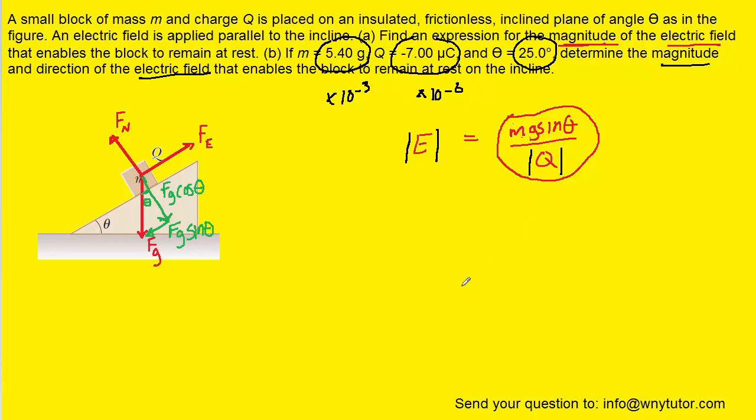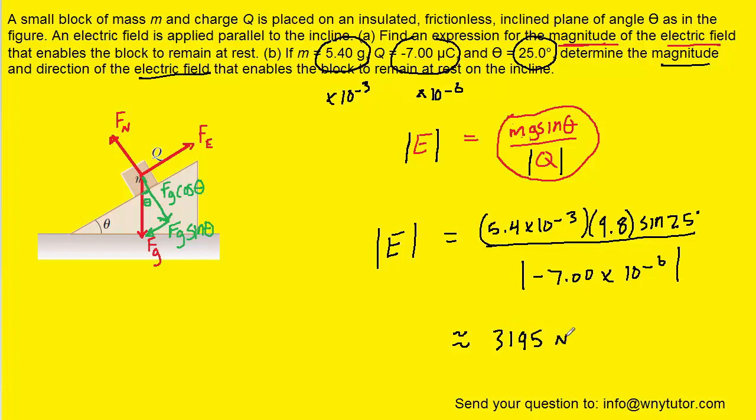We plug in the known values, and when we calculate that, we get approximately 3,195. The standard unit of electric field is newtons per coulomb, so this gives us the correct magnitude for the electric field.